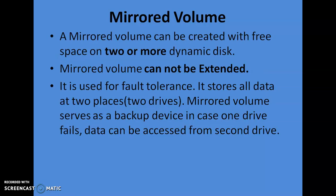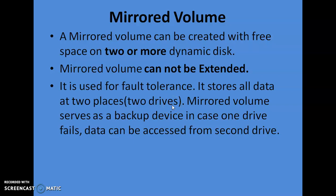A mirrored volume can be created with free space on two or more dynamic disks. A mirrored volume cannot be extended, but it is fault tolerant. It stores data in two separate drives — if you are storing files A, B, C, all data is stored on two different hard drives simultaneously. If one drive is damaged, you can still access your data from the other drive. This is the key feature of a mirrored volume.